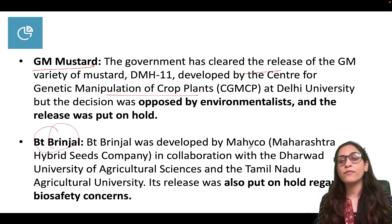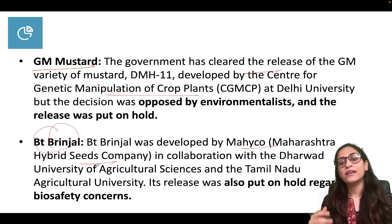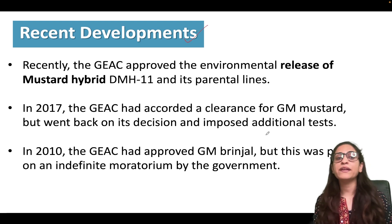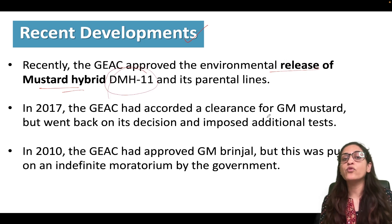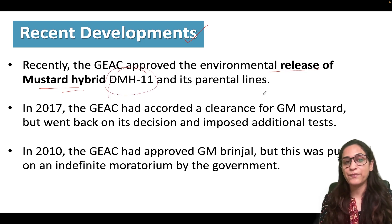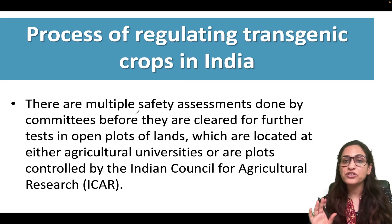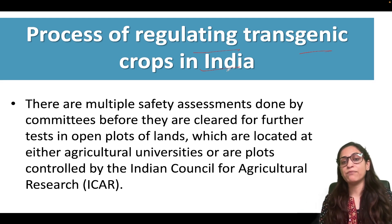Similarly, Bt brinjal was developed by Maharashtra Hybrid Seeds Company and Tamil Nadu Agricultural Sciences University, but it was also put on hold due to biosafety concerns. The recent development is that GEAC approved the environmental release of GM mustard hybrid DMH-11 on parental lines in 2017, but again additional tests were demanded and it was stopped due to protests.